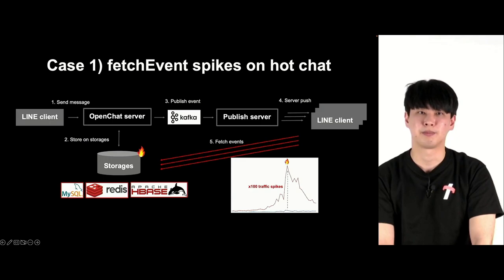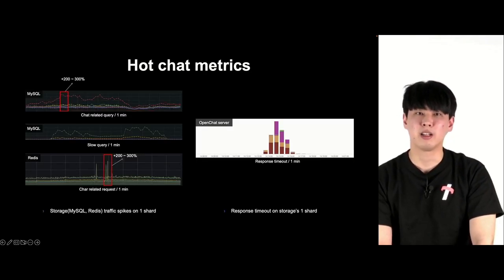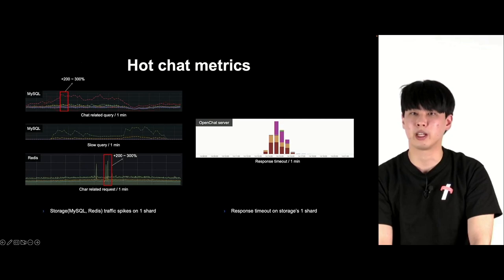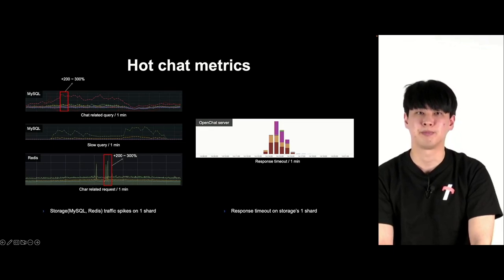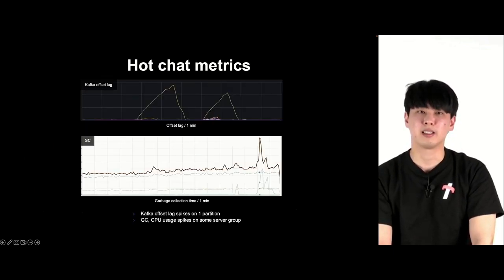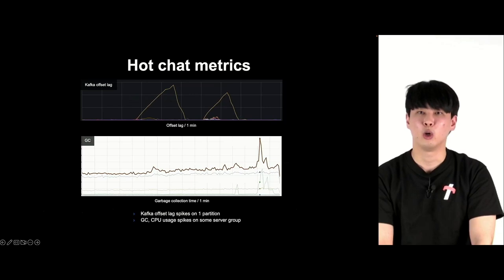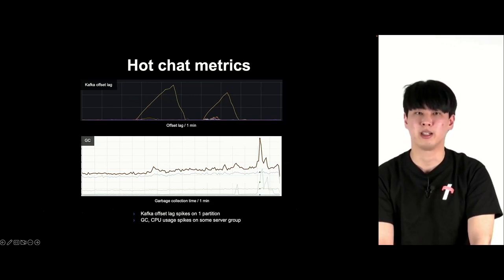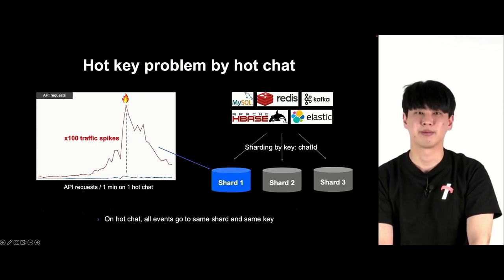These are the relevant metrics. Due to the surge of fetch event API requests, MySQL and Redis shard requests increased by more than three times, and there were response timeout issues. In Kafka, a large volume of events was generated in certain partitions, increasing the offset lag, and the GC of the server group and CPU usage also soared. We can see this through the metrics.